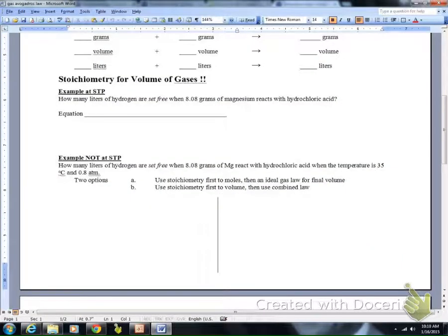Now let's do some stoichiometry with examples at STP and then examples not at STP. Our first example is at STP. It asks how many liters of hydrogen are set free when 8.08 grams of magnesium react with hydrochloric acid. This is a single displacement reaction, and we'll write out our balanced equation. I can just do stoichiometry because I'm at STP. I know at STP, 1 mole of gas is 22.4 liters, and I can use that in my t-chart.